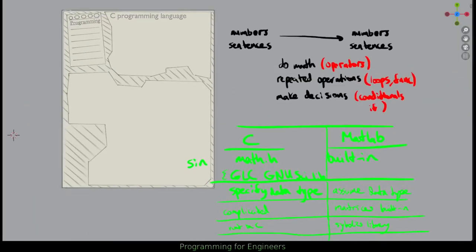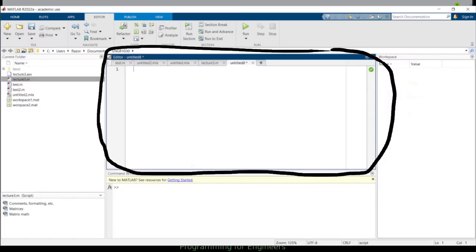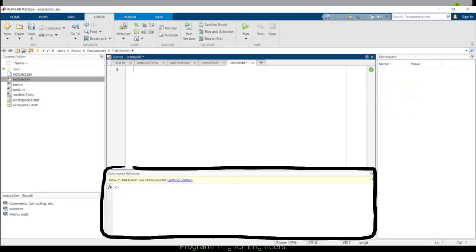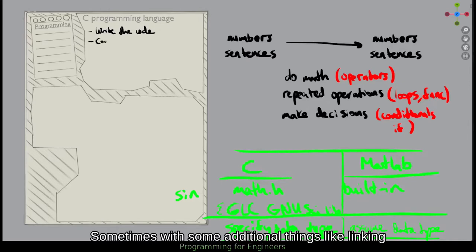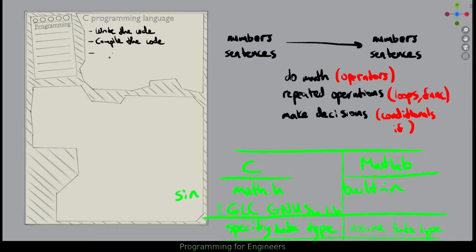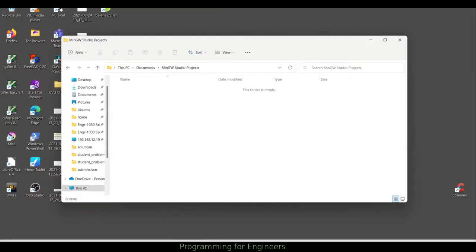Let's get started into C. The first thing is how you actually run C code. With something like MATLAB, you just type in your code in the editor or command window and press the run button. With C, you have to write the code, compile the code, and then run the executable. Let's go in and start with a Windows environment using MinGW.